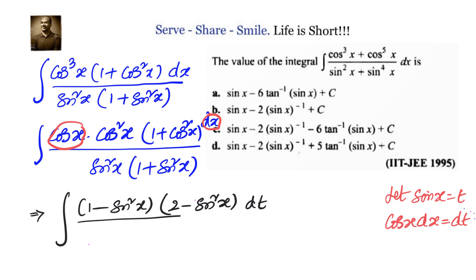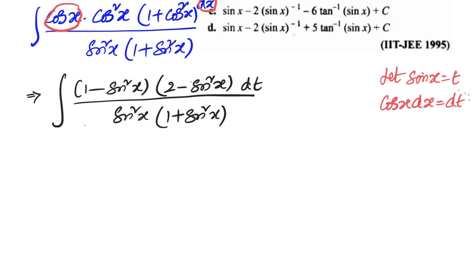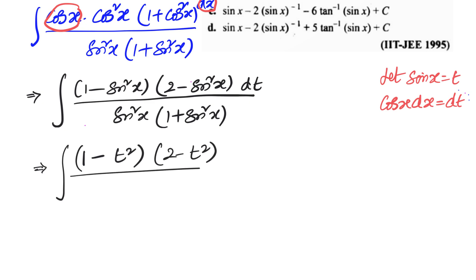In the next step we change sin x into t as well. In the denominator we have sin²x times (1 + sin²x). So we change everything in terms of t, giving us (1 − t²)(2 − t²) dt divided by t² · (1 + t²).